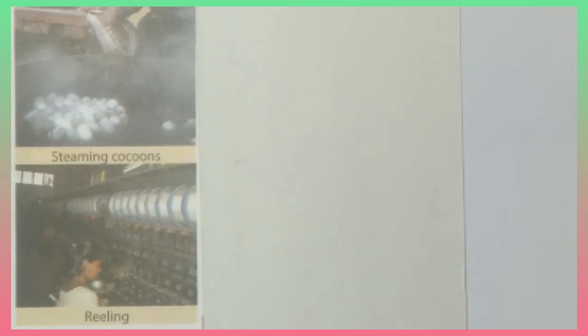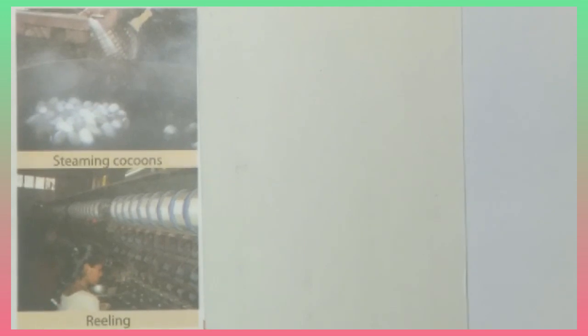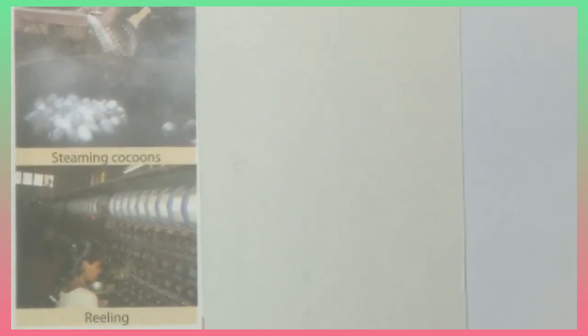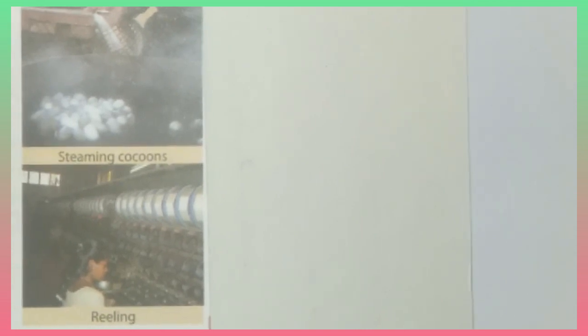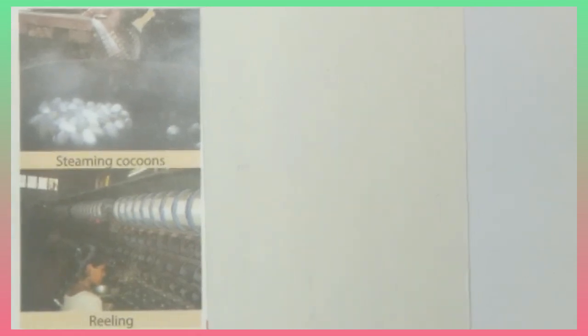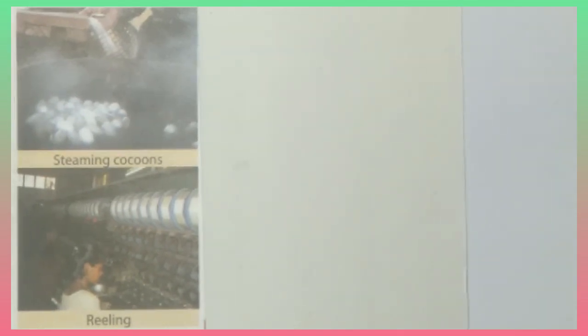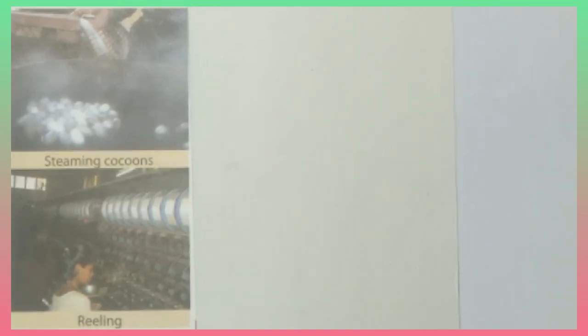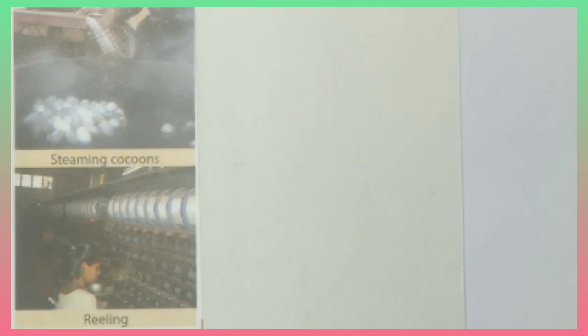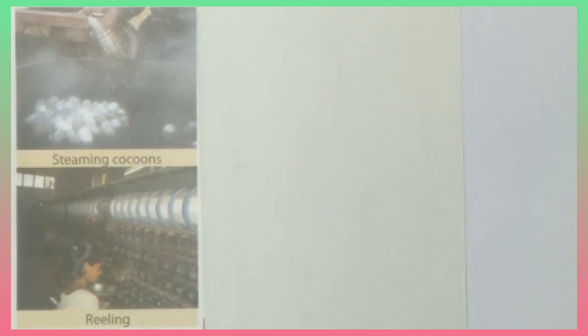So this process is the artificial process and this is called the rearing of silk moths. Now the next is all cocoons are boiled. Boiling releases the silk fiber from the cocoon. Then that silk fiber is removed from cocoon and the silk fiber from many cocoons are brought together to form a single silken thread. This process is called reeling of silk. Reeling is done in special machines which unwind the fibers of silk from the cocoons.